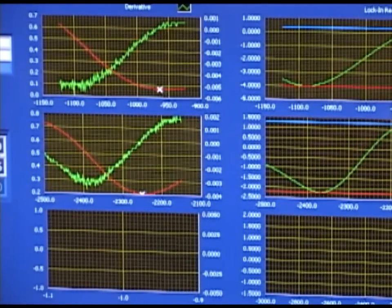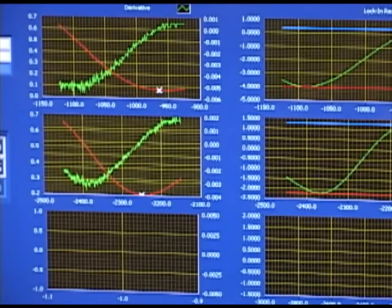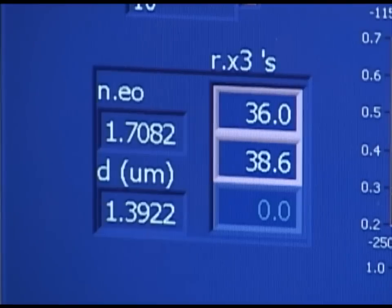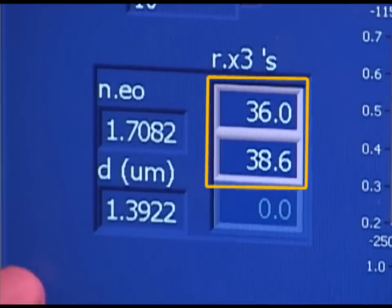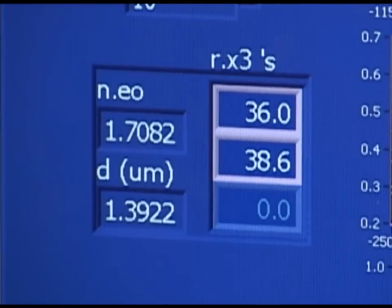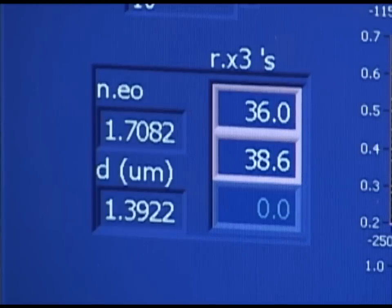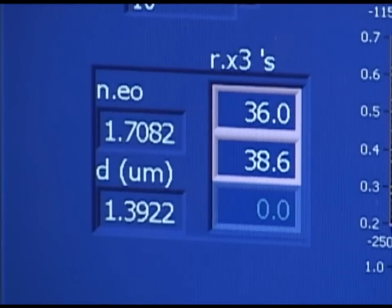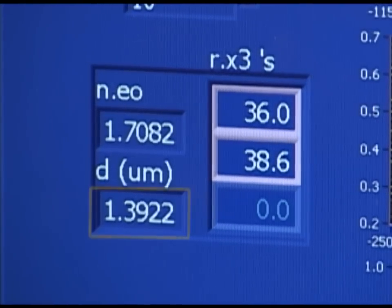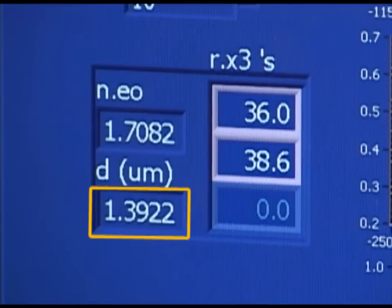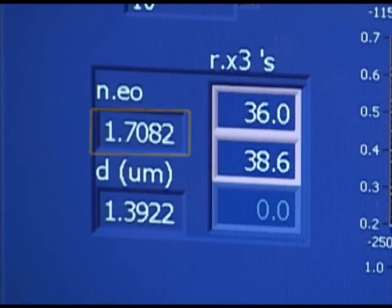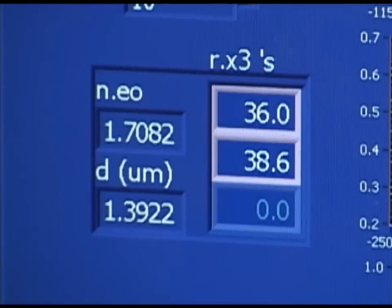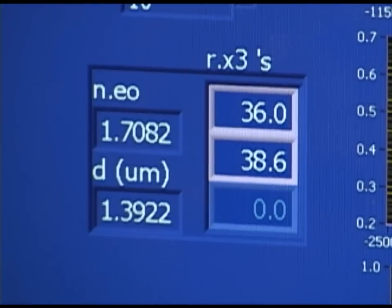From this fit, we can conclude that our values for R33, refractive index, and thickness are now correct. This sample reports R33s for each mode to be 36 and 38.6 picometers per volt. That's a relatively close agreement, so we can guess that the R33 is thus somewhere around 37 picometers per volt. The thickness it reports is 1.39 microns and the refractive index is 1.7. This data seems logical and the fit looks good, so the fitting process is now done and these values can be recorded.